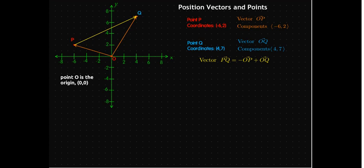Going from P to O, that's the opposite of OP. That would be the vector PO, or minus OP. And then, going from O to Q, of course, is the position vector OQ.